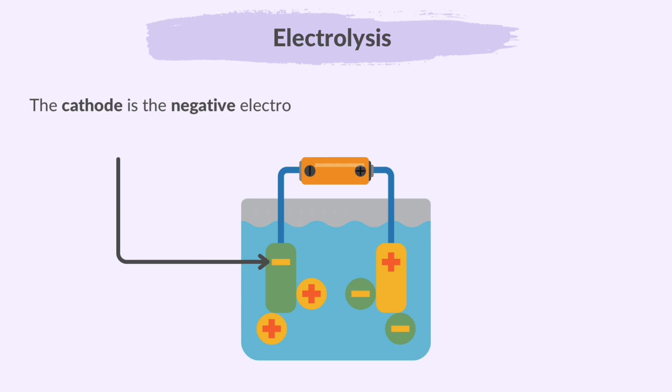The cathode is the negative electrode. Opposite charges attract, so the negative charge on the cathode pulls the positively charged cations towards it. So cathodes attract positively charged cations.